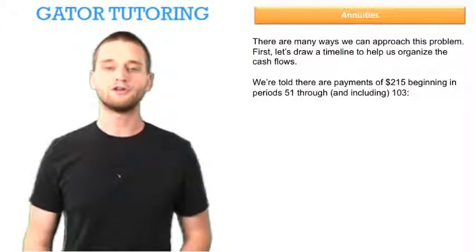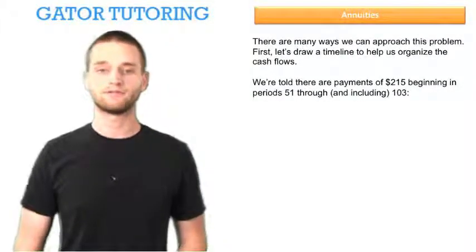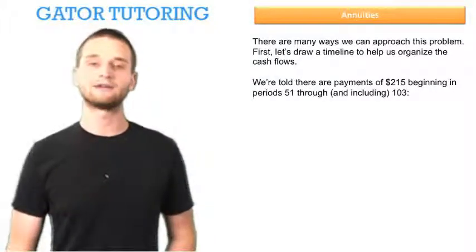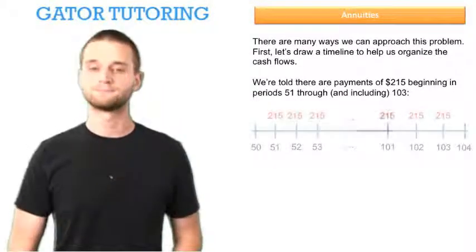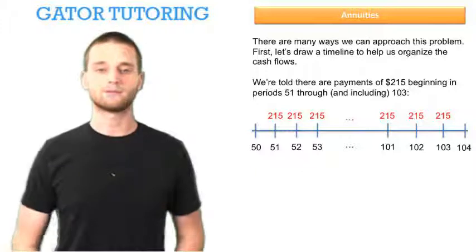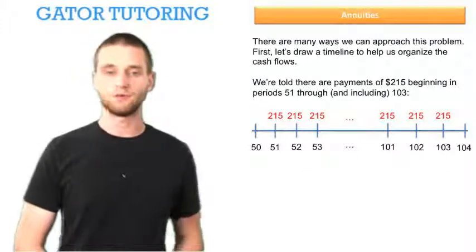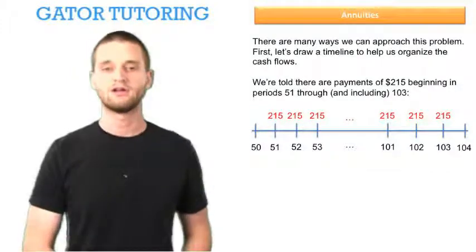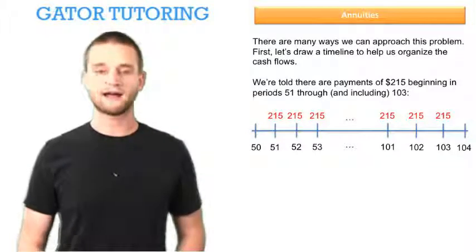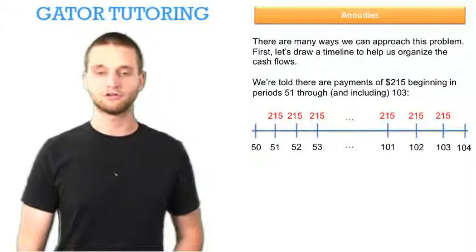We're told there are payments of $215 beginning in periods 51 through and including period 103. And so here's a time chart which shows the cash flows beginning in 51 of $215 continuing every year thereafter up until period 103.